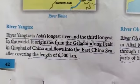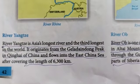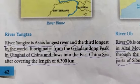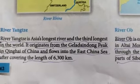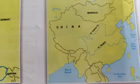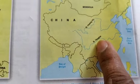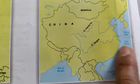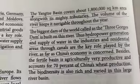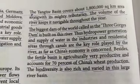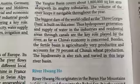Coming to River Yangtze. River Yangtze is Asia's longest river and the third longest in the world. It originates from the Galadendong Peak in Qinghai, China, and flows into the East China Sea after covering a length of 6,300 kilometers. In this map, they have shown two rivers — River Yangtze and River Huang He. These are the two major rivers of China. The Yangtze basin covers about 1,800,000 square kilometers along with its mighty tributaries.